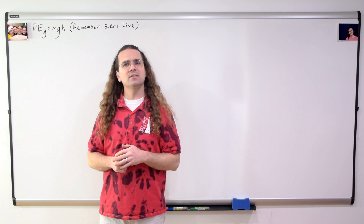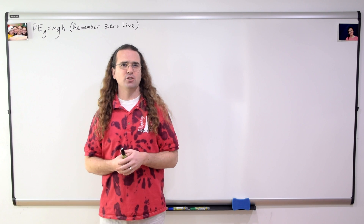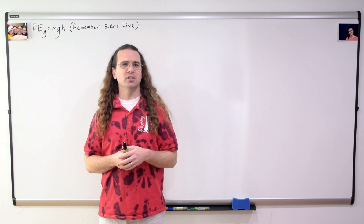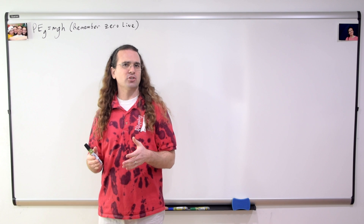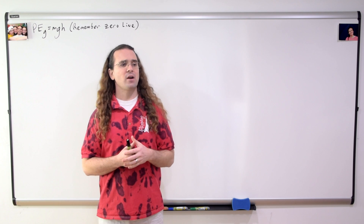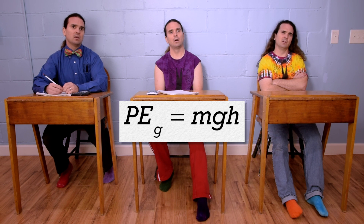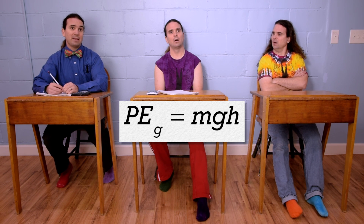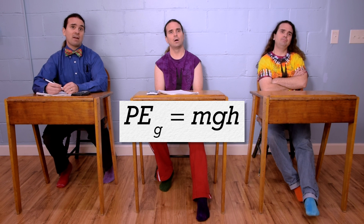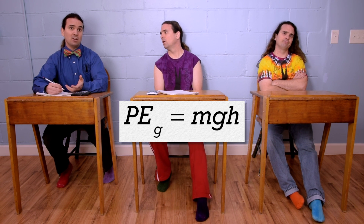How about this instead? Billy, if this equation represents your gravitational potential energy, then this is the gravitational potential energy which exists between you and what other object? That is the gravitational potential energy between me and — well, little g is the acceleration due to gravity here on planet Earth, so that must be the gravitational potential energy which exists between me and the Earth.